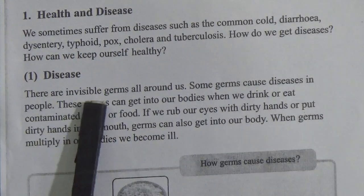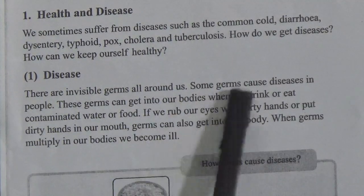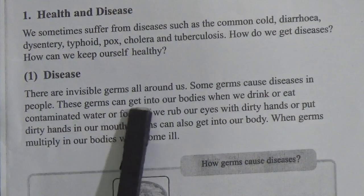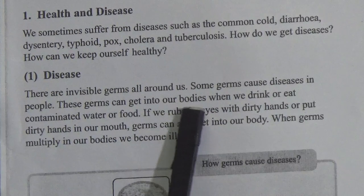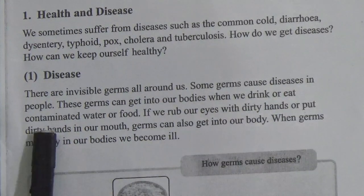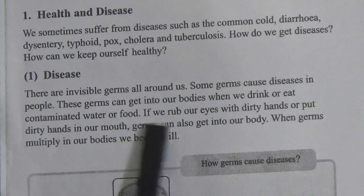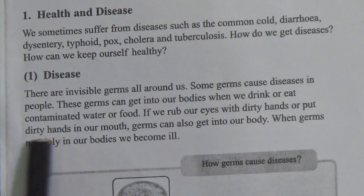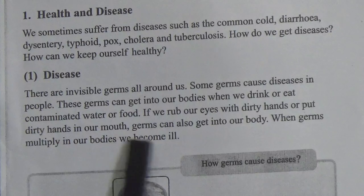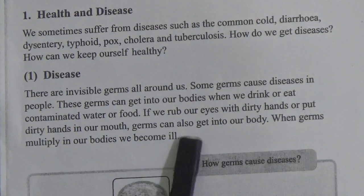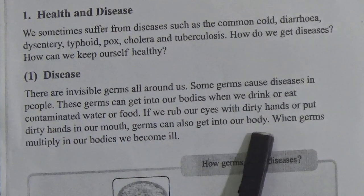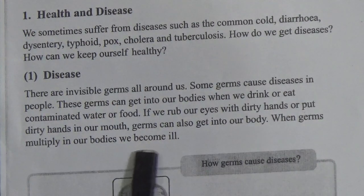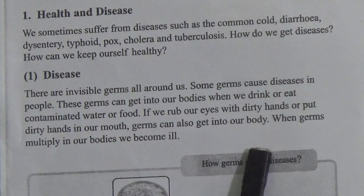There are invisible germs all around us. Some germs cause diseases in people. These germs can get into our bodies when we drink or eat contaminated water or food. If we rub our eyes with dirty hands or put dirty hands in our mouth, germs can also get into our body. When germs multiply in our bodies, we become ill.